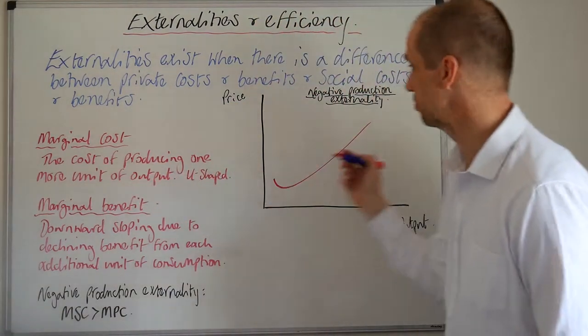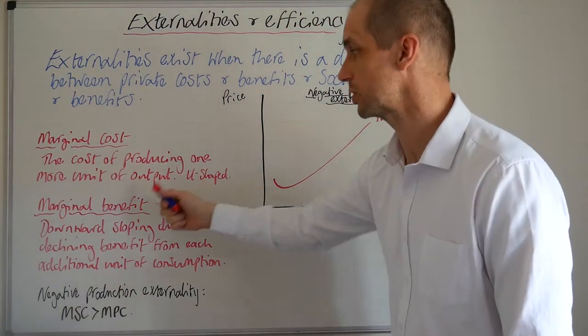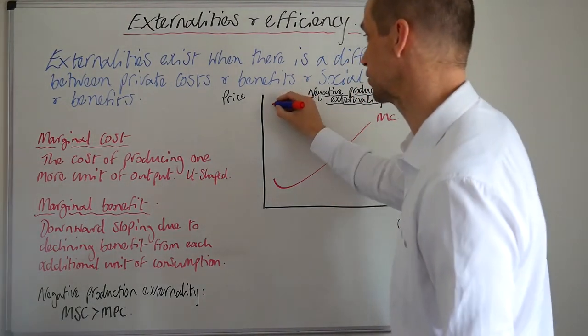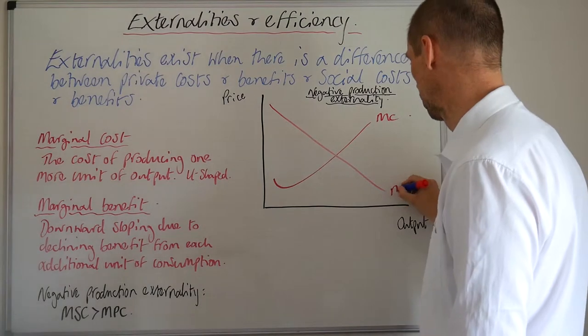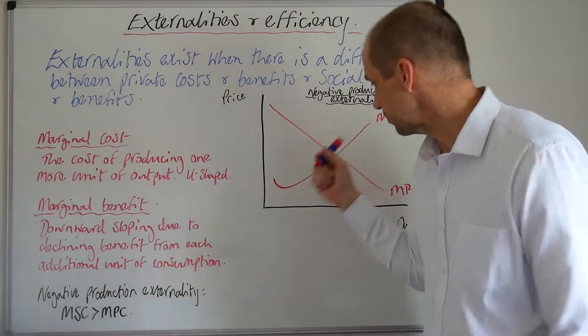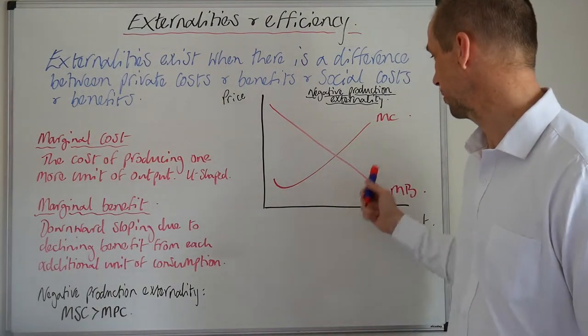Then we've got marginal benefit. Let's just label that before we move on. So we've got our marginal cost. Our marginal benefit, meanwhile, is downward sloping. So it looks something like this. There it is. That's our circumstance that we have here so far. Marginal benefit, marginal cost.